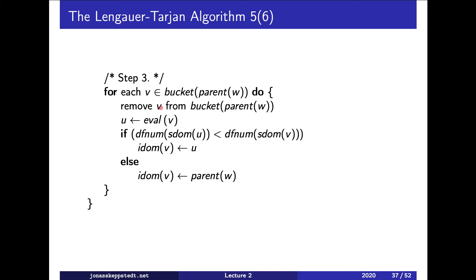We remove v, do eval and check if this node with smallest ancestor, the return value from eval, if that has a smaller s-dom than the one we already have found, then our s-dom is not our immediate dominator.